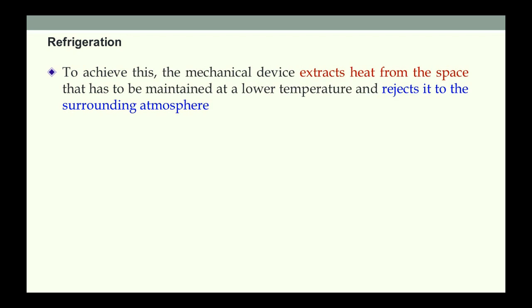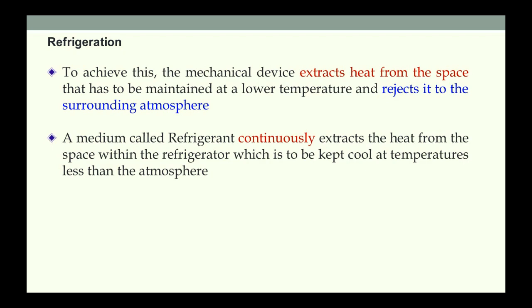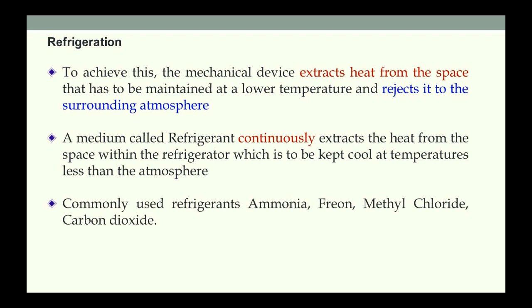In VCR, that is vapor compression refrigeration system, a mechanical device extracts heat from the space that has to be maintained at a lower temperature and rejects it to the surrounding atmosphere. A medium called refrigerant continuously extracts heat from the space within the refrigerator to be kept cool at temperatures less than atmosphere. Commonly used refrigerants are ammonia, freon, methyl chloride, and carbon dioxide. Nowadays, environment-friendly hydrocarbons like propane R290 and isobutane R600A are used.